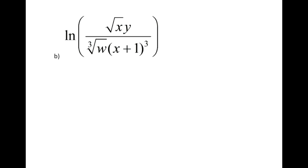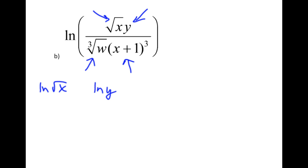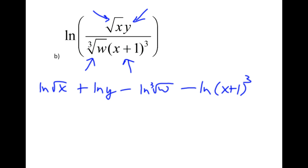Let's do one more problem. I've got the natural log of the square root of x times y over the cube root of w times the quantity x plus 1 cubed. I've got 4 different things to get their own natural log: ln of square root of x, ln of y, ln of cube root of w, and ln of x plus 1 cubed. I assign positives and negatives depending on where they were originally. The x and the y are on the top so they both get positives. The w is on the bottom so it gets a negative. The x plus 1 is on the bottom so it gets a negative.